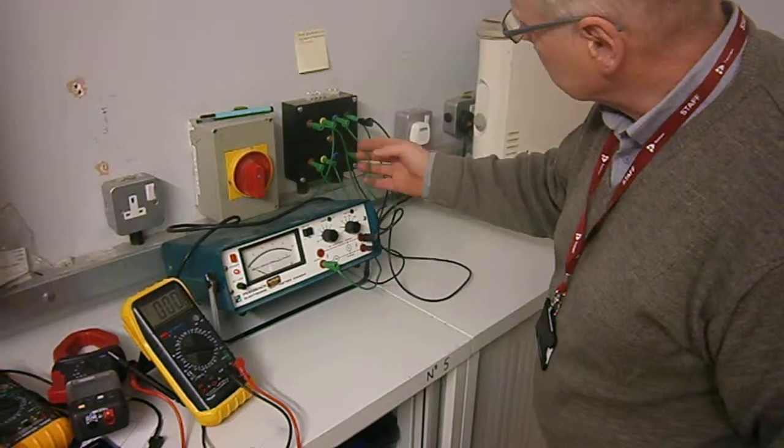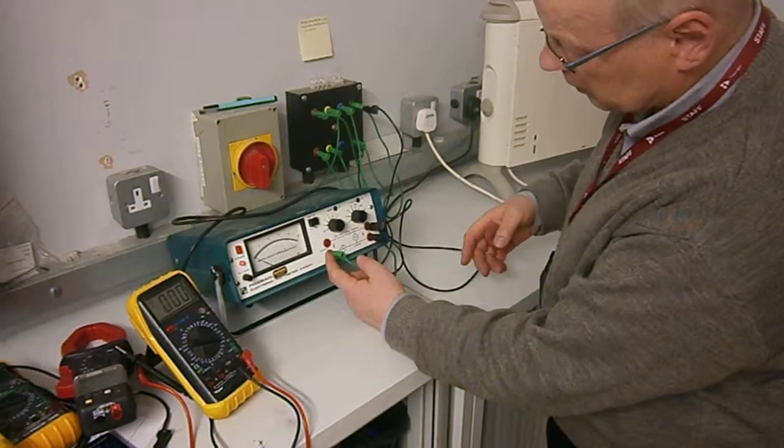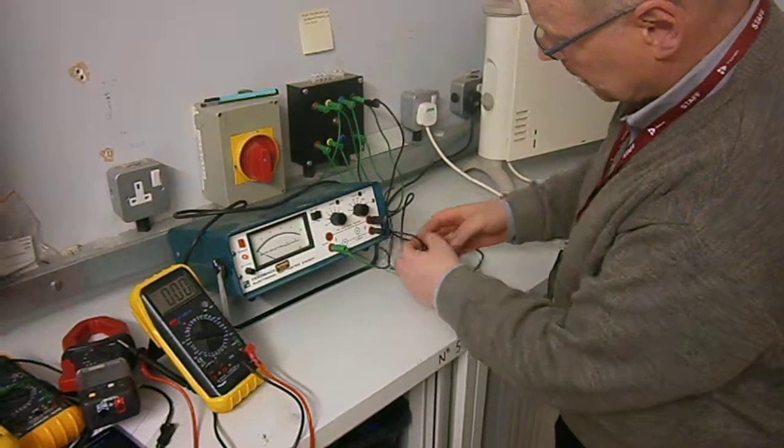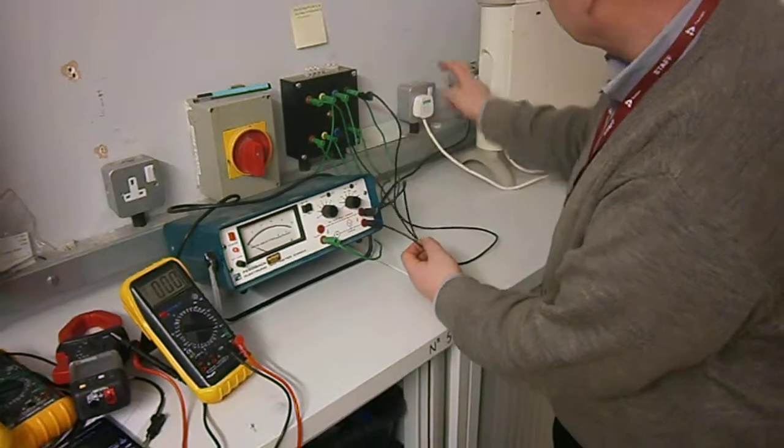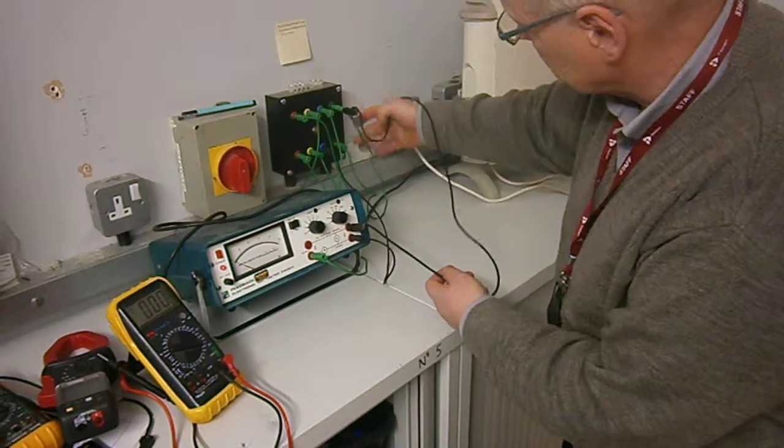I'm using the blue phase from the supply going into the ammeter supply and then back to the load and it's coming out of this socket here. I'm using the voltage across to the neutral connection on here.